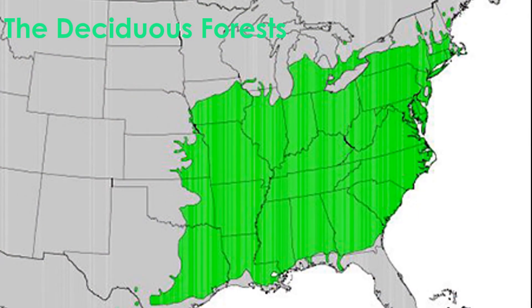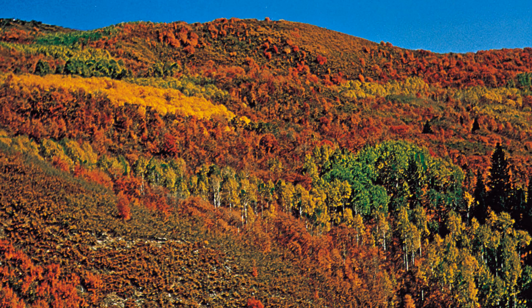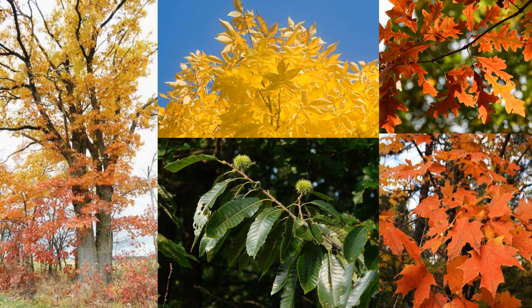Deciduous forests are dominated by broadleaf trees, spreading over 26 states from Florida up to New England and southern Canada, extending as far as Texas and Minnesota. The leaves change color and fall from the trees in autumn and grow back in spring, putting on a beautiful show every autumn. Since temperatures are warmer in summer and summers are longer, there is great diversity of life. You will find trees such as oak, chestnut, maple, and hickory.